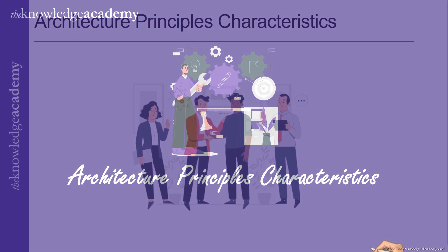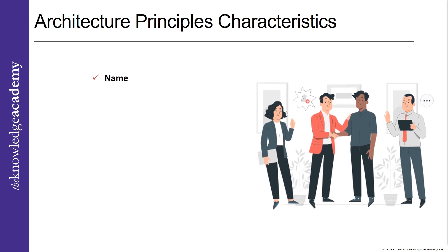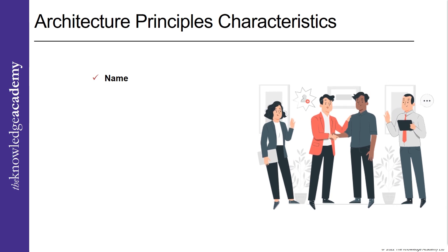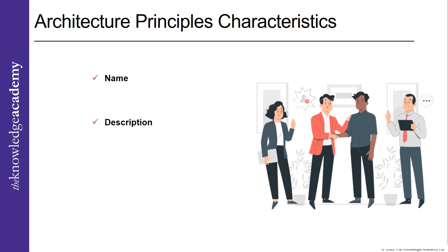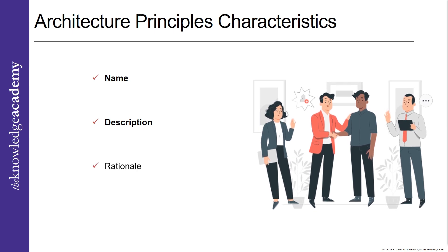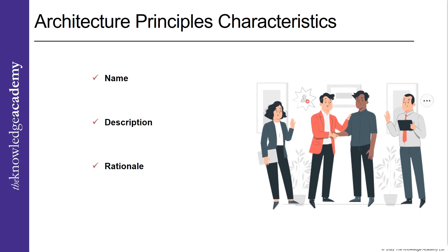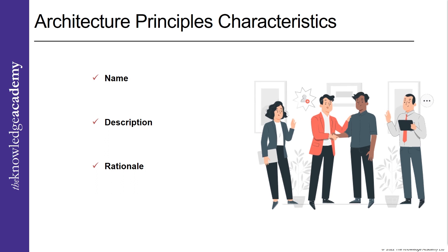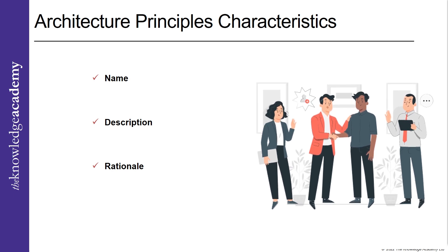Architecture Principle Characteristics. Let's go through some of the architecture principle's characteristics. First, Name. The name should be short and distinctive while yet capturing the essence of the rule. No particular technology platforms must be mentioned in the name or the summary for the principle. Second, Description. The key principle should be stated explicitly in the description. The majority of the information management principles are described similarly from firm to firm. Third, Rationale. The advantages of the firm obtained by adhering to the principles are illustrated using business terminology. Similarities between the business principles and principles of information and technology should be emphasized. The explanation must also illustrate its relevance to other concepts and objectives. When describing situations where one rule supersedes another during the decision-making process, it should be utilized with clarity.